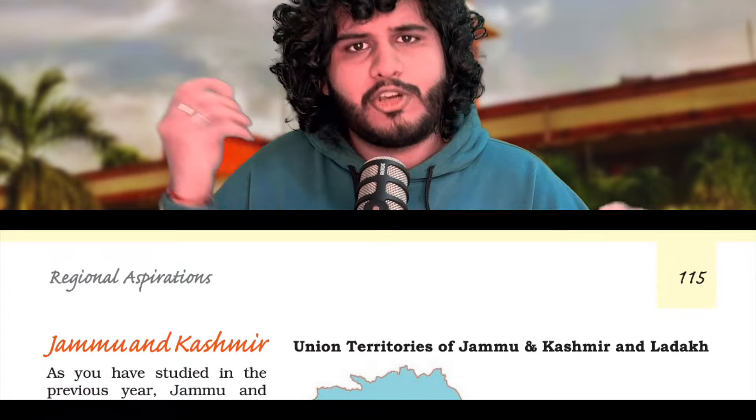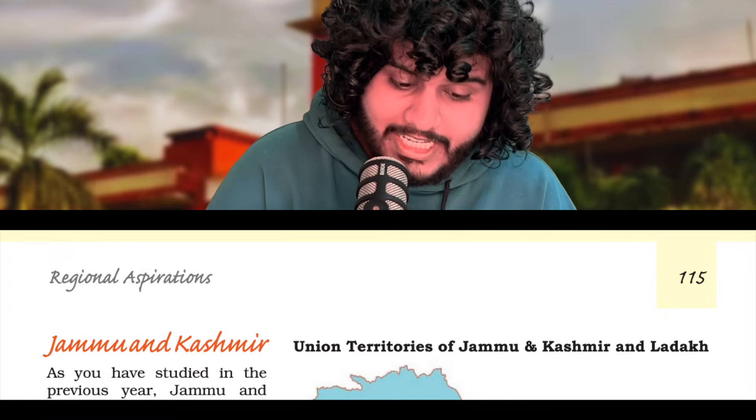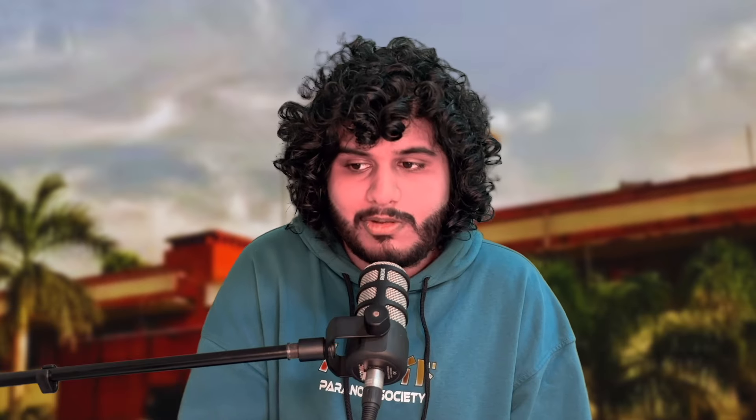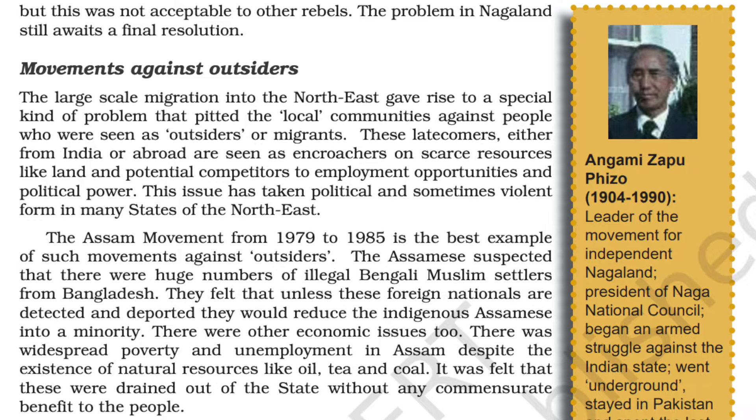Then we do Regional Aspirations. Areas of tension: J&K is very important — 1 to 6 markers based on J&K itself, covering external problems, internal problems, and latest developments including the creation of Ladakh. The Dravidian movement can be a 4–6 marker. The Punjab issue — 4–6 marker. Northeast movements against outsiders — 2 to 4 marks, very important. Sikkim merger — 2 to 4 marks. The five lessons of national integration at the end can become a 6-marker. Remember that in this chapter, every leader's name is important — rote-learn any leader associated with a region.